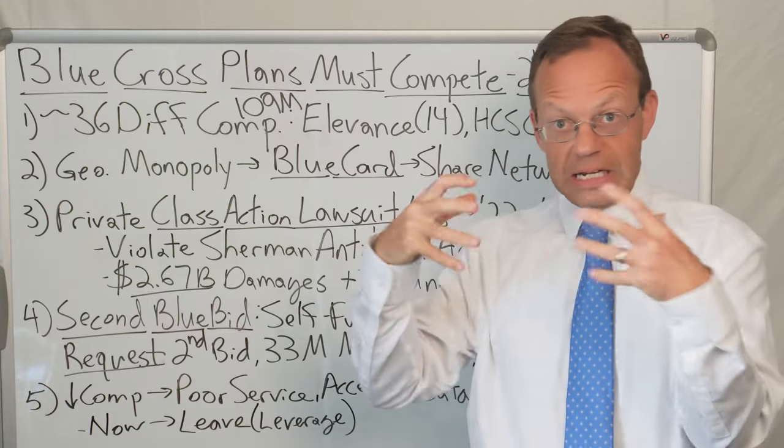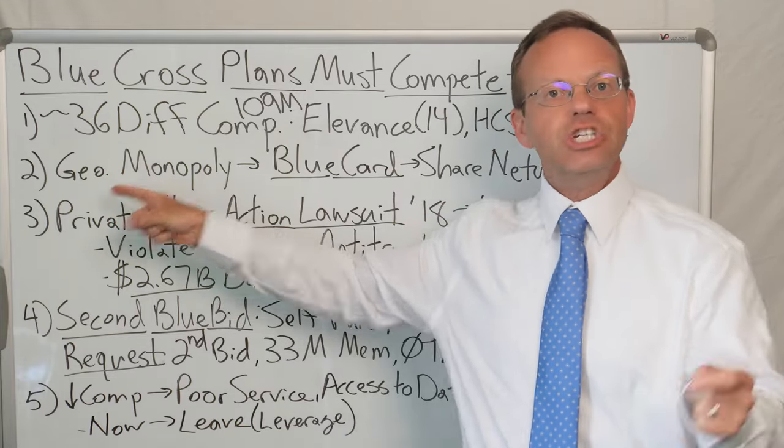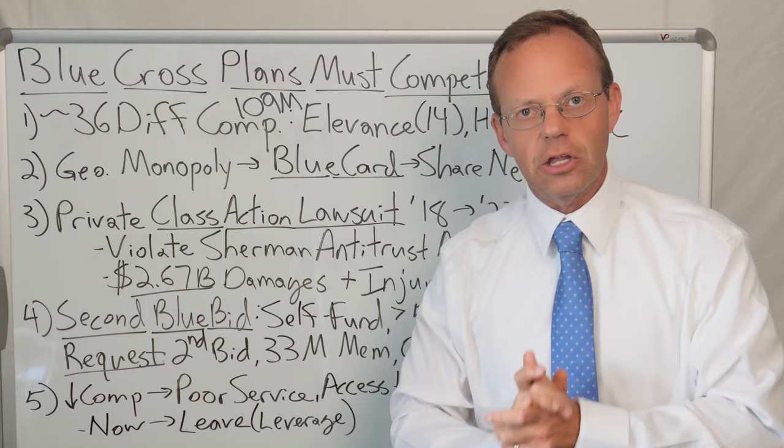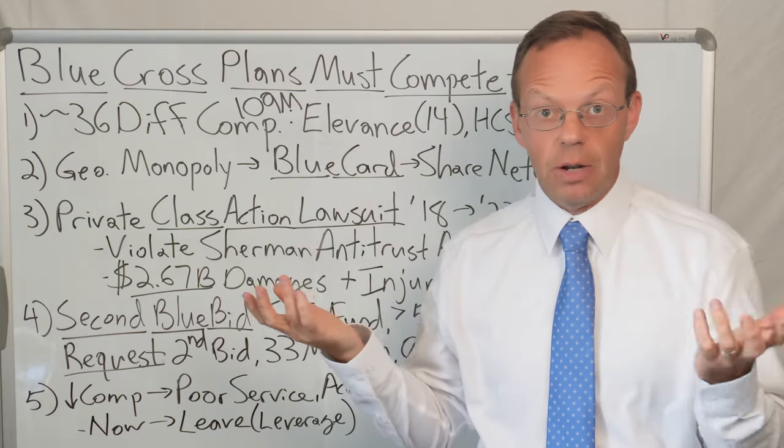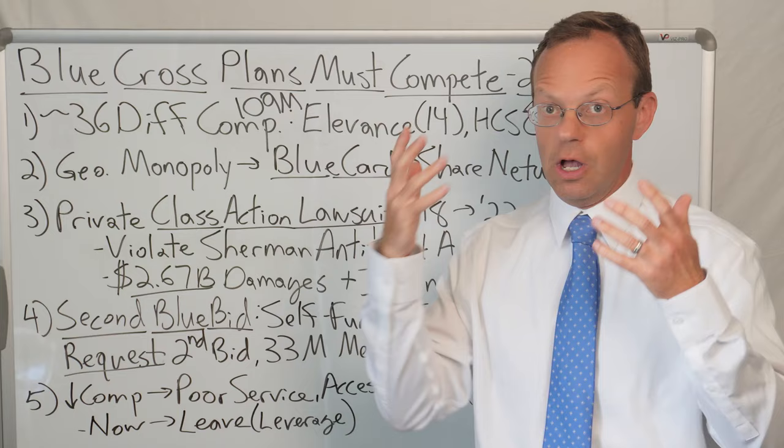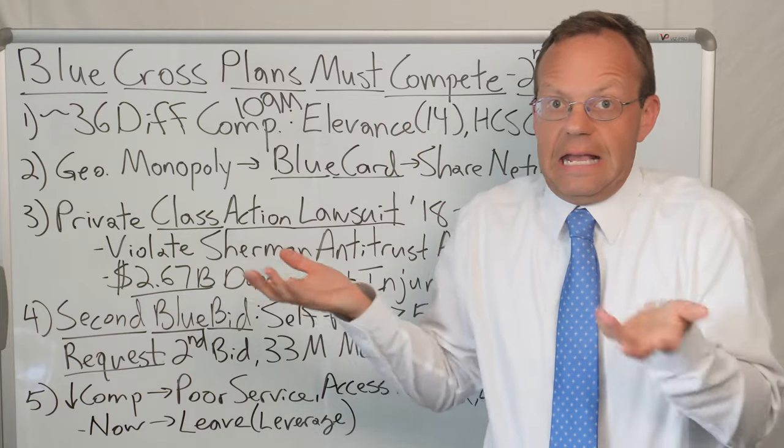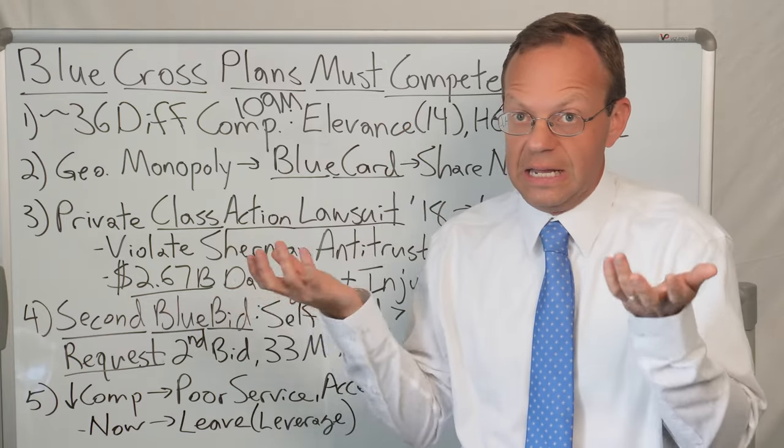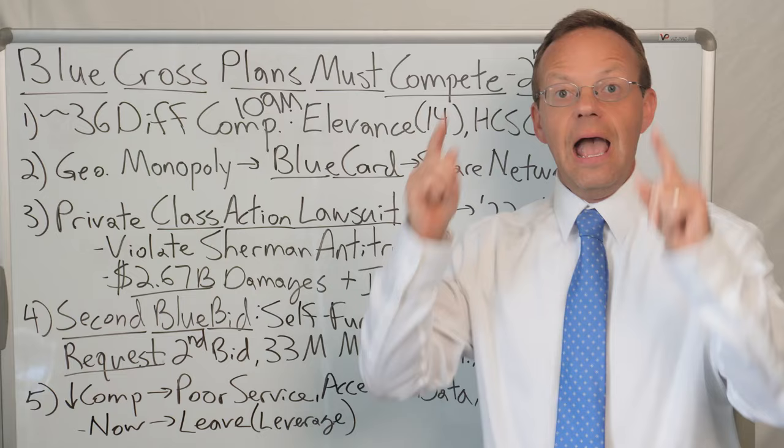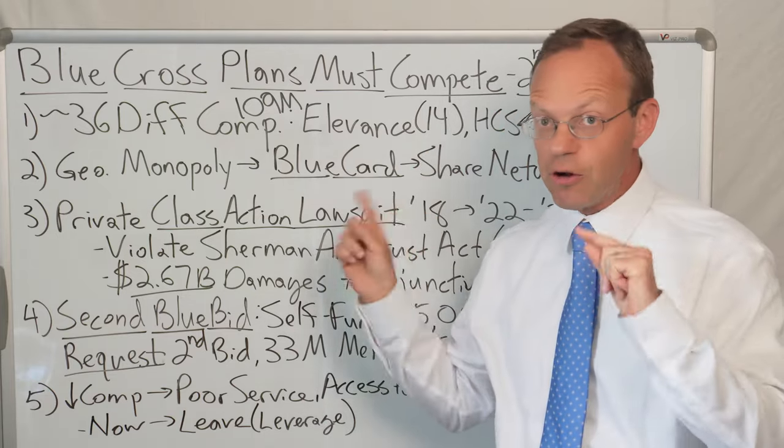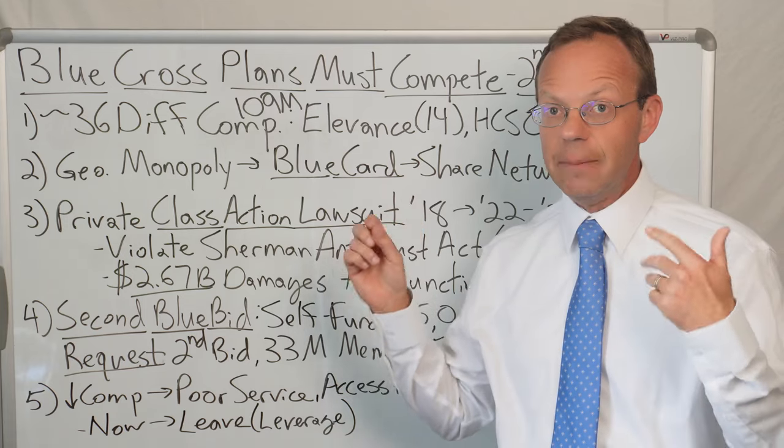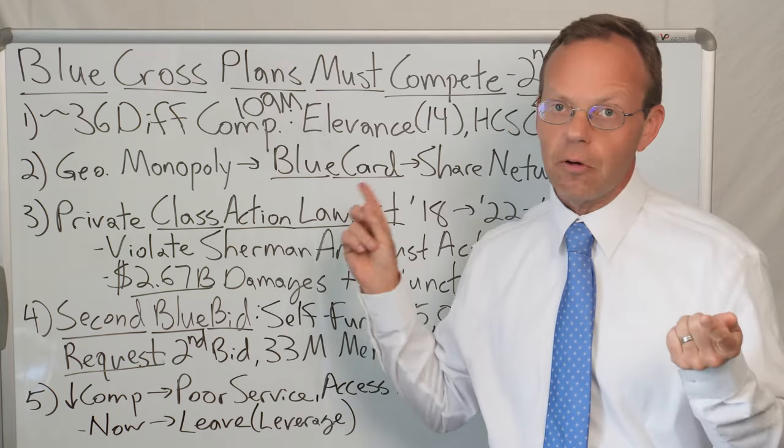And they have agreed with each other to provide geographic monopolies for each other. What do I mean by that? If an employer is in Illinois and they want to be on Blue Cross, their only choice is Blue Cross of Illinois. They can't use another Blue Cross plan in another state. However, the different Blue Cross plans have agreed to share their network with each other in a program called the Blue Card Program.